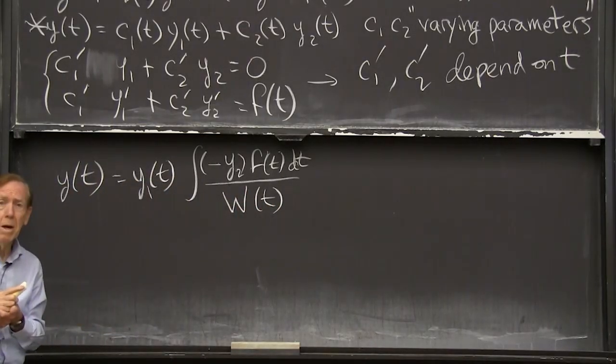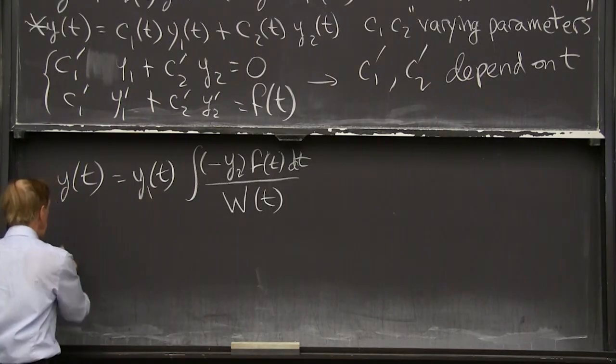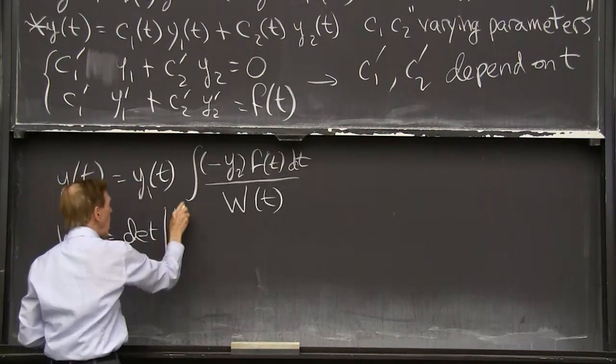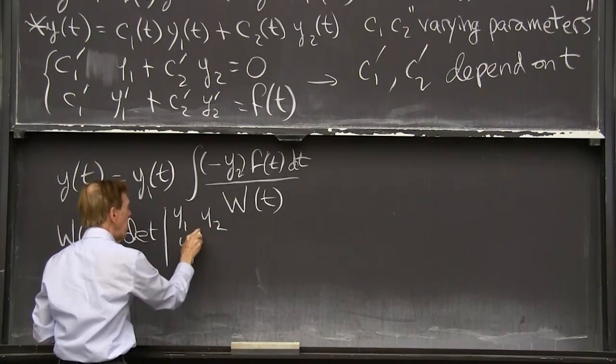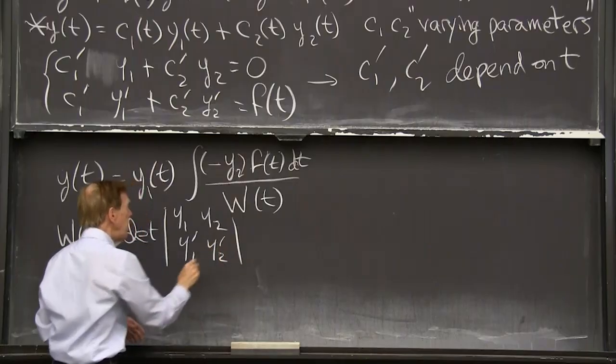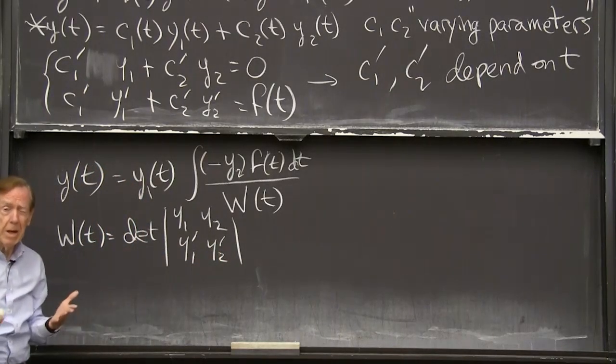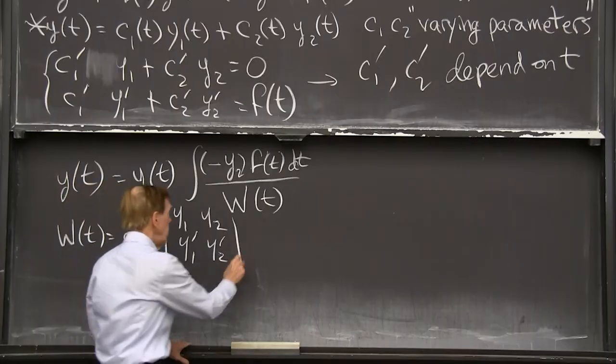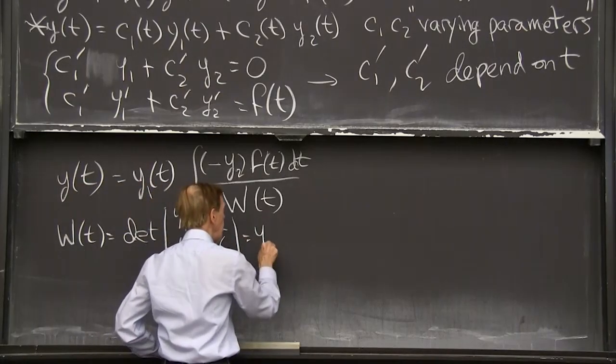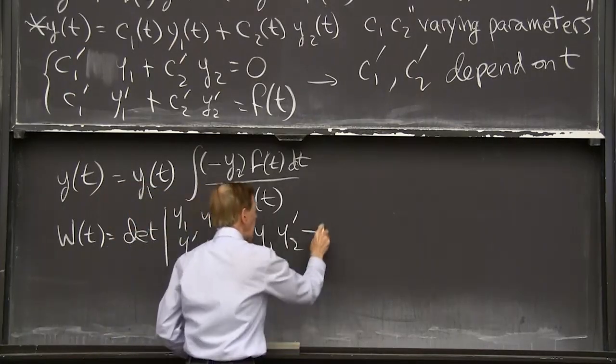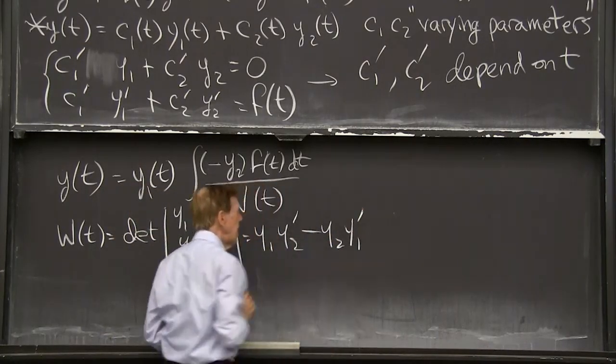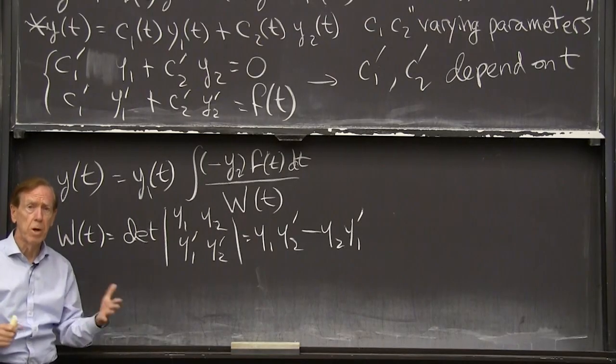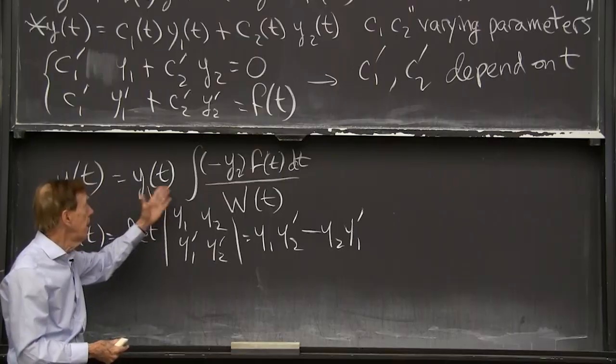So c1 prime that comes out of that is a minus y2 times the f dt. And then there is a denominator. Because if I have two equations in two unknowns, there's a little two by two determinant. I'll just call it w. It has a famous name in differential equations. And I'll tell you that name. W of t is the determinant of what I have there. y1, y2, y1 prime, y2 prime. Two equations. Some, they have to be independent. They have to be invertible to give me. And it's this determinant that's the critical thing. So that's y1, y2 prime minus y2, y1 prime. That's the function. Remember, we know y1 and y2. The whole deal is starting with y1 and y2, null solutions, and combining them.